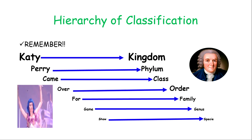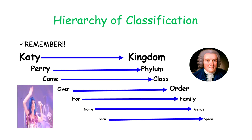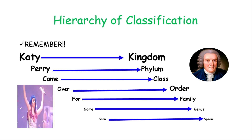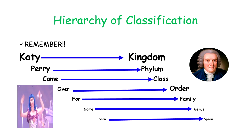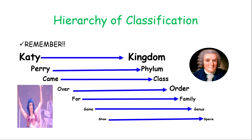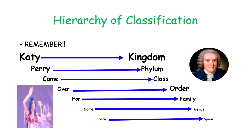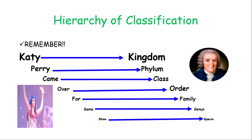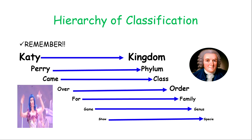The K is for kingdom, the P for phylum, the C for class, the O for order, the F for family, the G for genus, and the S for species. Notice that the kingdom is the largest group and it narrows down to be very specific when it reaches the species. Remember: Katy Perry came over for a game show.